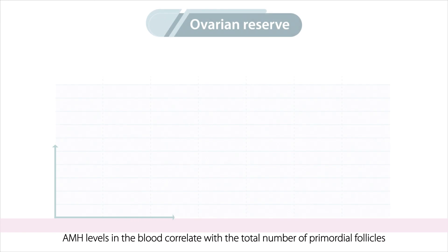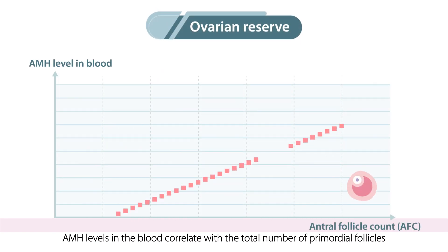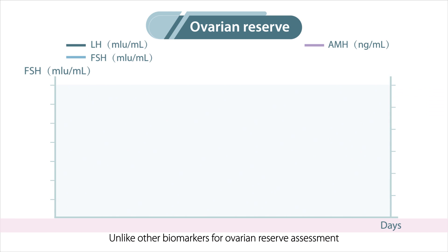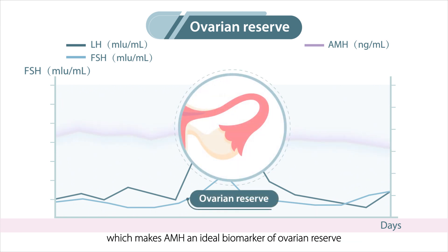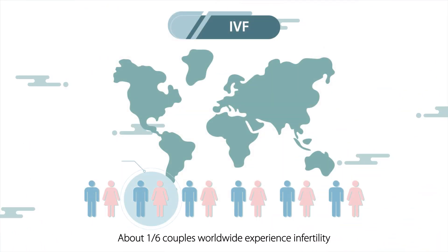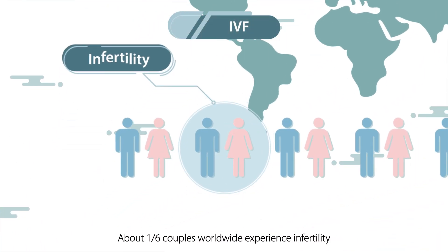AMH levels in the blood correlate with the total number of primordial follicles. Unlike other biomarkers for ovarian reserve assessment, AMH levels only fluctuate slightly during normal menstrual cycles, which makes AMH an ideal biomarker of ovarian reserve.